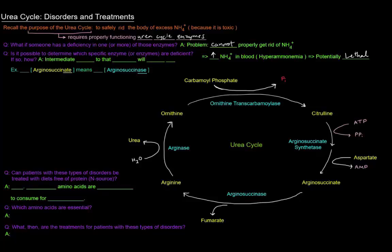So is it possible to determine which specific enzyme or enzymes are deficient? If so, how? Well, the answer to the first part is yes. And if so how? Well, the intermediate prior to that deficient enzyme will build up. So what does that mean? Let's use an example here. Arginosuccinate is an intermediate of the urea cycle right here, so let's say that there's a buildup of arginosuccinate.